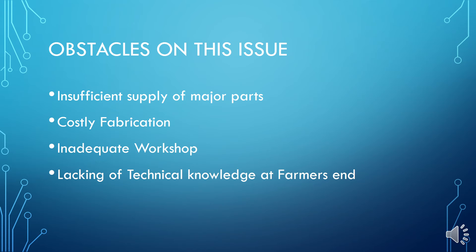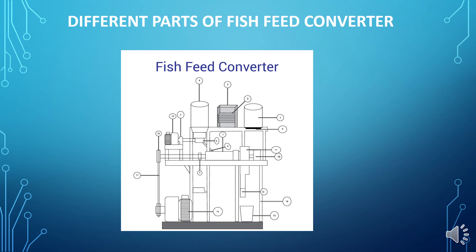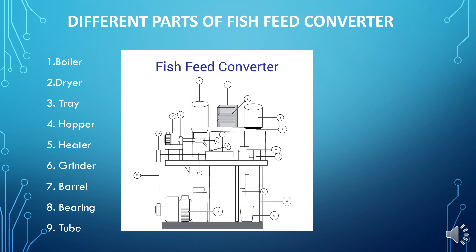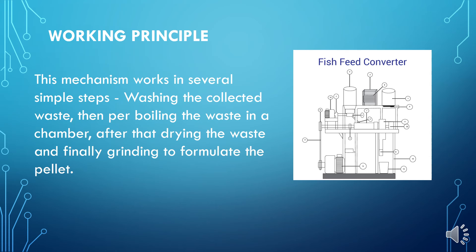We have some pain points, like insufficient supply of major parts and inadequate workshops in the local area. The mechanism of our fish feed converter involves different parts — mainly a boiler, dryer, grinder, and pelletizing machine. As this is designed for rural people, its mechanism is very simple: washing, boiling, drying, grinding, and finally forming the pellet.